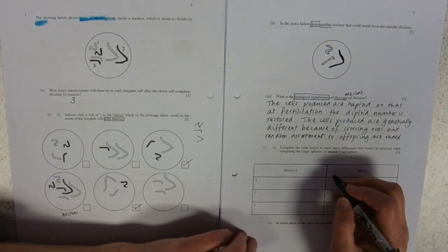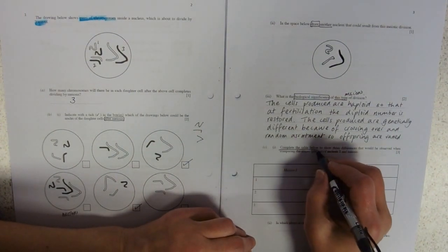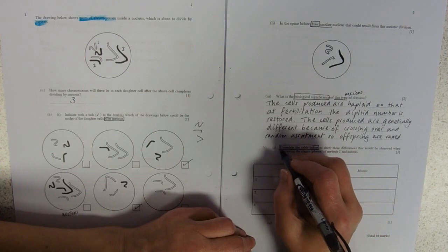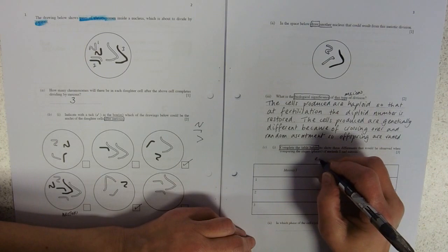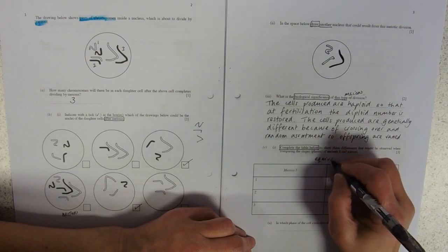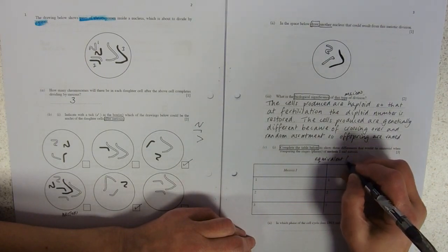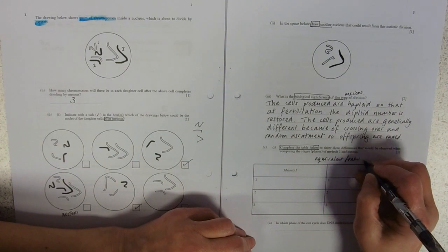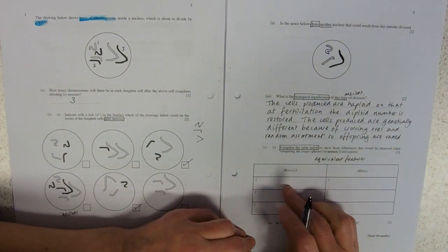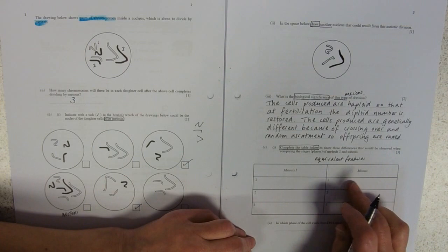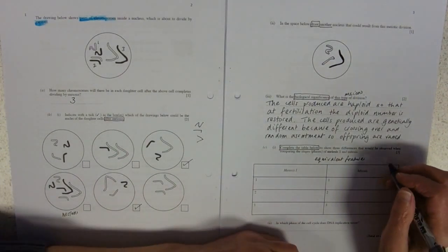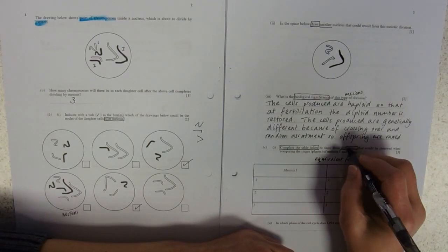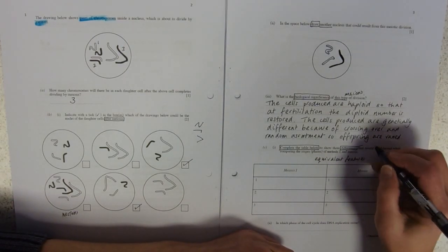Okay, complete the table below. Now completing a table is always a bit of a thing. We need to remember to put equivalent features. So if I'm going to talk about, I don't know, number of chromosomes on this side, I need to talk about number of chromosomes on that side, even if I'm saying something different.